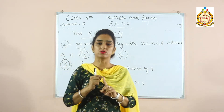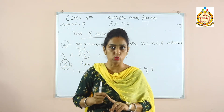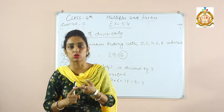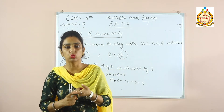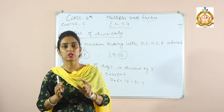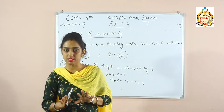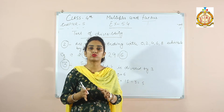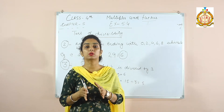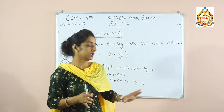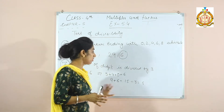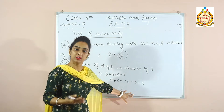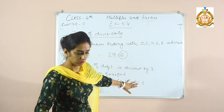To summarize: for divisibility by 2, the last digit should be 0, 2, 4, 6, or 8. For divisibility by 3, the sum of all digits must be divisible by 3.